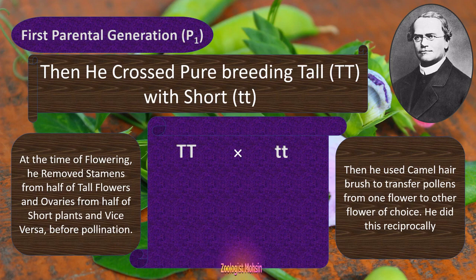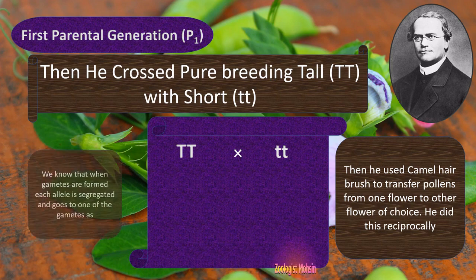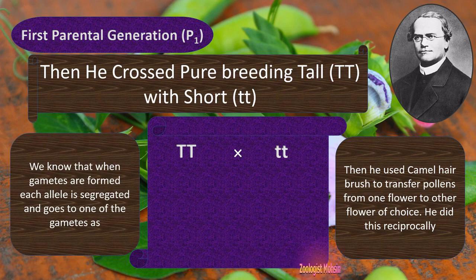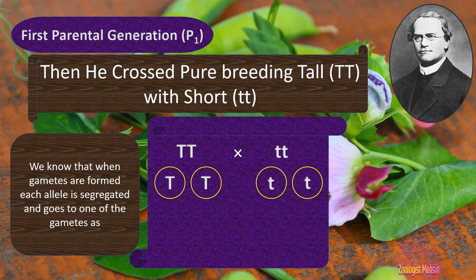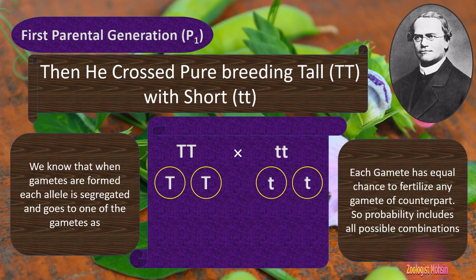We know that when gametes are formed, each allele is segregated and goes to one of the gametes. These are the gametes from one parent, and these are from the second parent. Each gamete has an equal chance to fertilize any gamete of its counterpart, so probability includes all possible combinations.